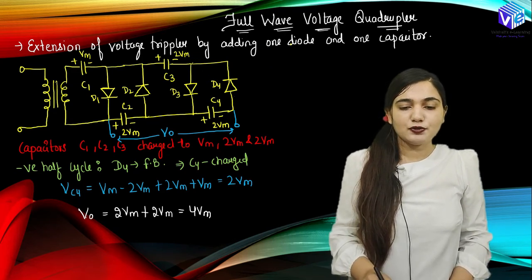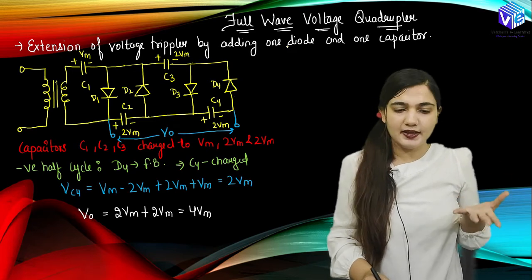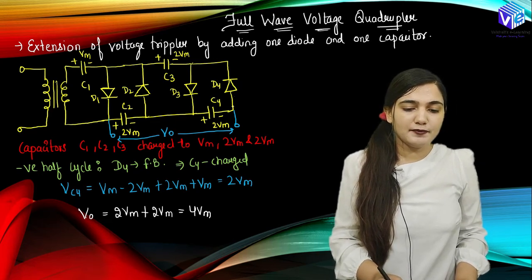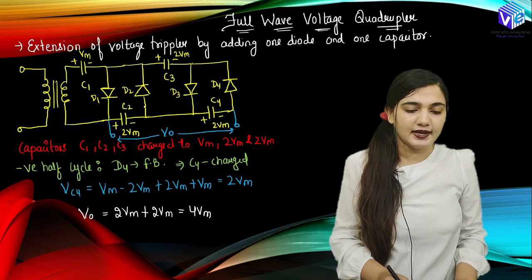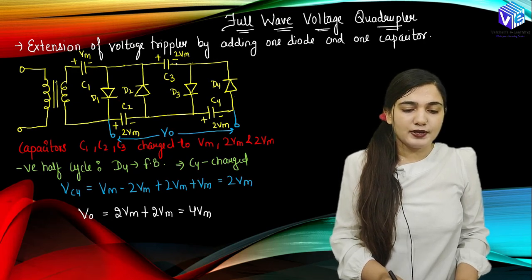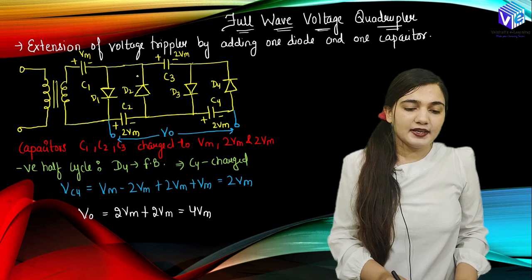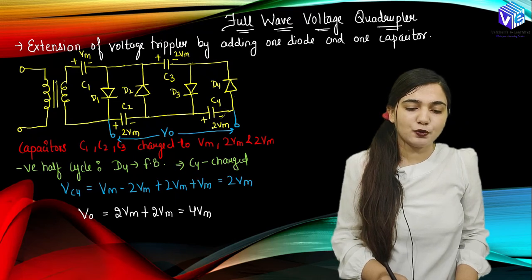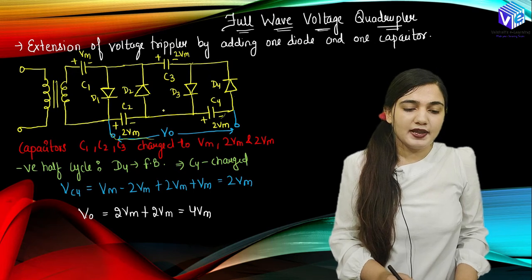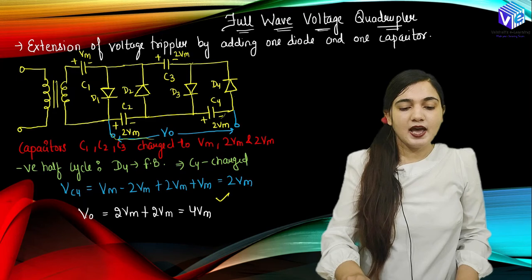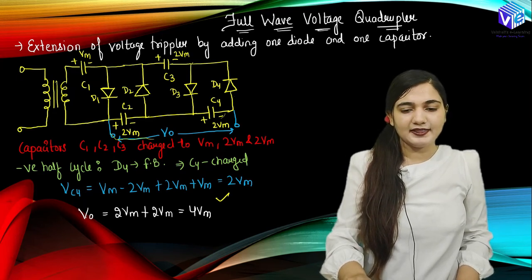The full-wave voltage quadrupler gives 4 times the maximum of the input AC voltage. It is an extension of the voltage tripler by adding one more diode and one capacitor. Capacitors C1, C2, C3 charge to 2Vm each in successive half cycles. In the next negative half cycle, capacitor C4 is charged to 2Vm. Taking the output from C2 and C4 gives 2Vm + 2Vm = 4Vm output.